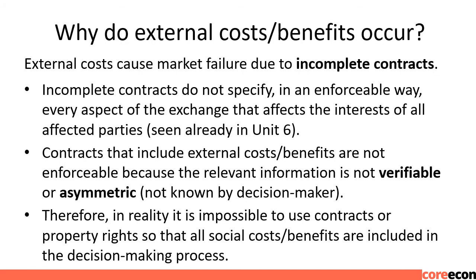Why do external costs or benefits occur? External costs cause market failure due to incomplete contracts. Incomplete contracts do not specify, in an enforceable way, every aspect of the exchange that affects the interests of all affected parties. Contracts that include external costs or benefits are not enforceable because the relevant information is not verifiable, or is asymmetric — not known by the decision maker. Therefore, in reality, it is impossible to use contracts or property rights so that all social costs and benefits are included in the decision-making process.